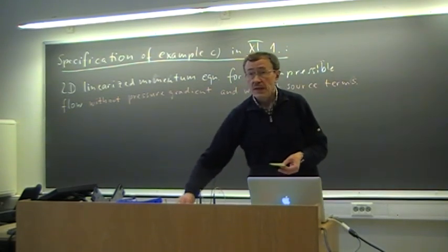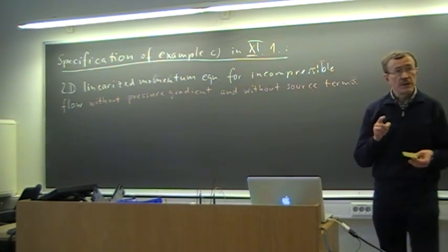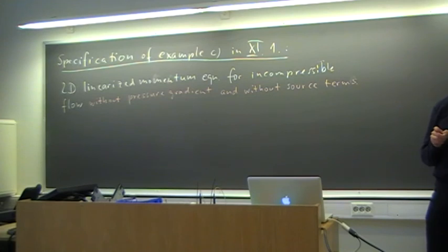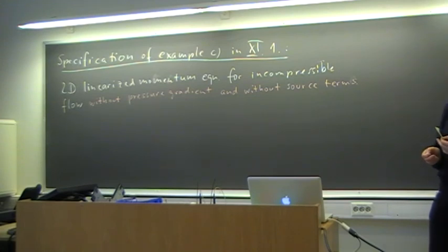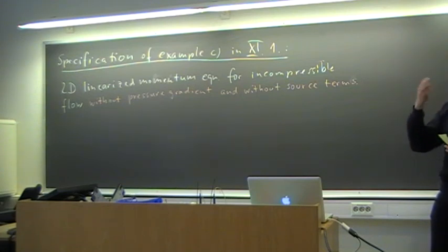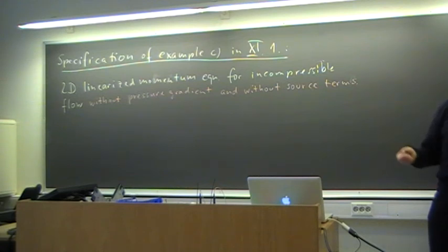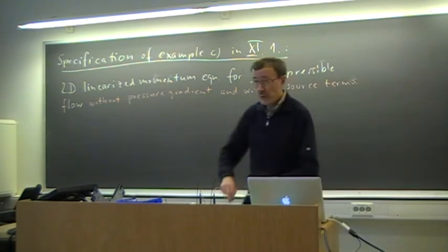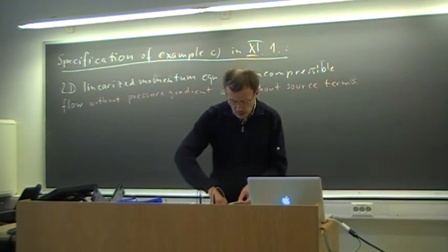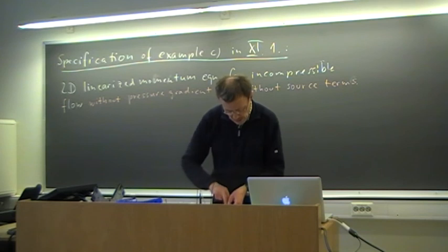What we did there is actually useful for the stability analysis of the Navier-Stokes equations. When we do the linearization, we do that locally — using the local velocity — and then we get this linear equation, and we can do the stability analysis of that with our scheme that we want to analyze. That is something we are going to use today.